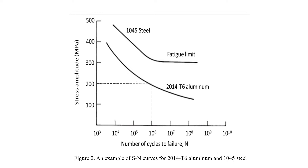This SN chart is a specific example for 2014-T6 aluminum and 2045 steel. On the y-axis is the stress, and on the x-axis the number of cycles to failure. Because the number of cycles can be very large, a logarithmic scale is usually used on the x-axis. For example, if a 2014-T6 aluminum member has a stress amplitude of 200 MPa, it will take about 1 million cycles of load to break.